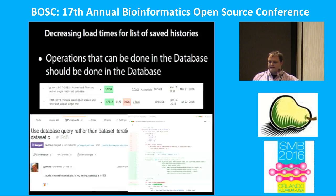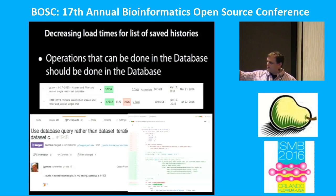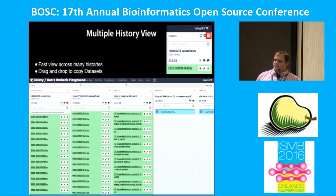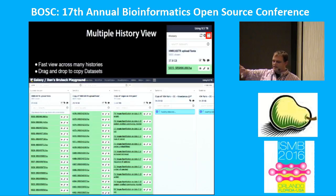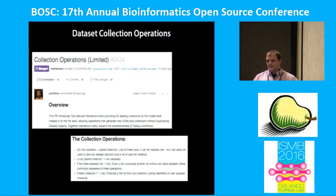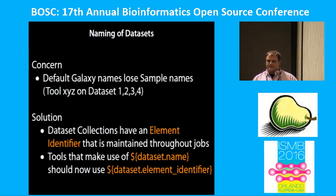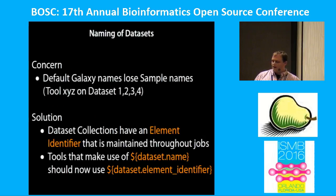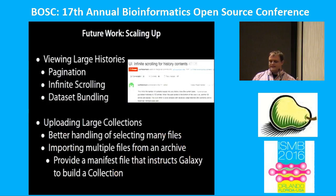What we've done recently to help with Galaxy is we've decreased the amount of operations and the amount of time required to view large shared histories. There's a multiple history view that you can now view inside of Galaxy, so you can view large histories all at the same time and drag and drop to copy between them. John Chilton has written a nice set of dataset collection operations. One of the big problems in Galaxy in the past has been naming of datasets — like XYZ on dataset 1, 2, 3, 4 — and we can now solve that by using dataset element identifiers.